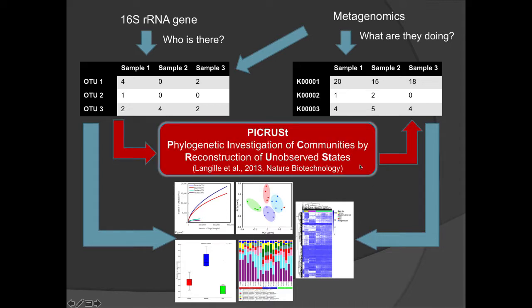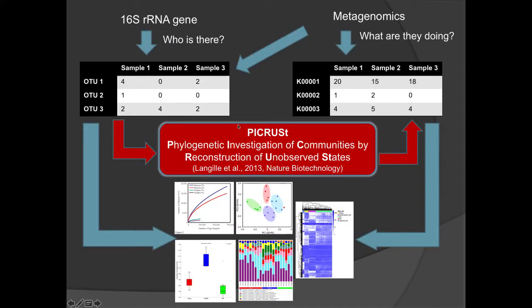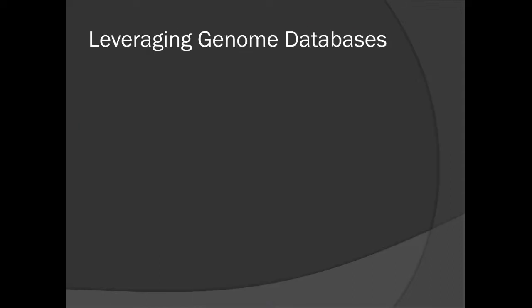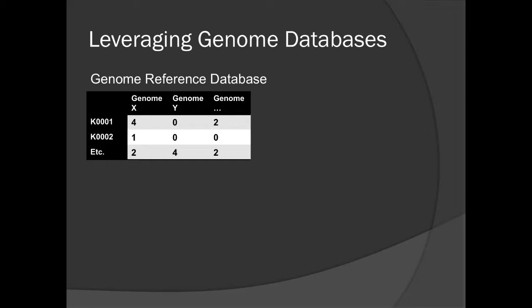PyCRUST essentially tries to predict this functional table — the abundances of gene abundances — from the information given by 16S data from an OTU table. This was published in 2013 and has been used quite a bit. It wasn't really updated much until just the past six months to a year, where now Gavin, my PhD student, has been working on it, and we're starting to push out PyCRUST 2. The idea behind PyCRUST is to leverage reference genome databases like PATRIC, NCBI, or IMG, where we have tens of thousands of reference genomes that have been isolated and sequenced.